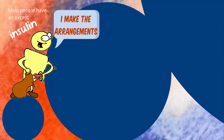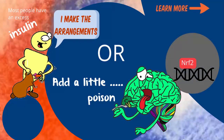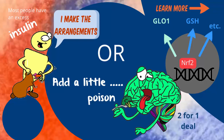The other way to boost GLO1 production is to take a small amount of phytochemicals with most meals. This will activate the antioxidant response element, turning on the gene expression of multiple defence enzymes, including GLO1 as well as glutathione. So eating vegetables is a 2-for-1 deal too.